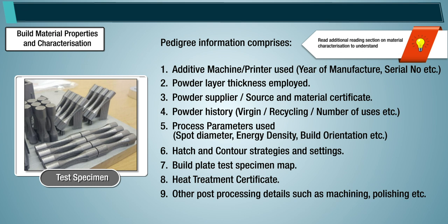Refer to the additional reading section on material characterization to understand the effect of build orientation and anisotropy; fatigue properties comparing metal PBF material versus cast versus wrought material; effect of post-processing; and effect of different machines and manufacturers.